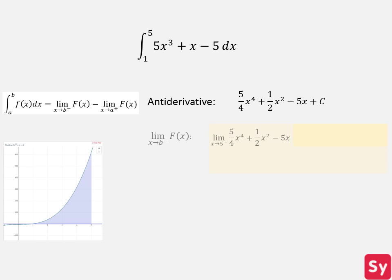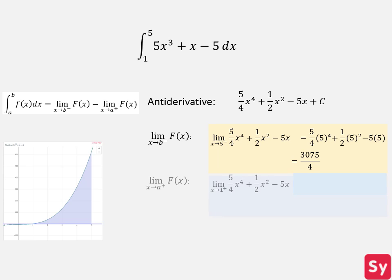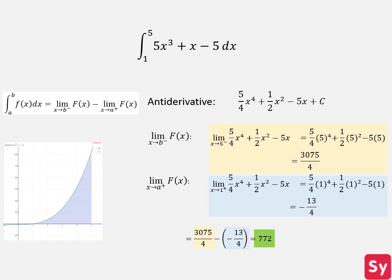Now we want to find the limit as x approaches 5 from the left of the antiderivative, so we plug in 5 to the antiderivative. We simplify this and get 3075 over 4. Next, we find the limit as x approaches 1 from the right of the antiderivative. We plug 1 into the limit and get negative 13 over 4. Now we plug these values into the equation and simplify, getting 772 as the area under the curve.